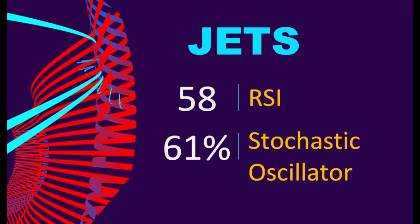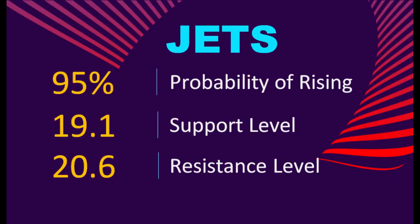The current stochastic oscillator of JETS is 61%. When the stochastic oscillator stays between 50 and 80, it may indicate that the stock is experiencing a mild downtrend with some selling pressure. In this case, an oversold signal could indicate that a stock is reaching a potential buying opportunity. Trend Outlook: The probability of JETS share price rising is 95%. Combining multiple technical analysis indicators, JETS has three bullish signals and three bearish signals.